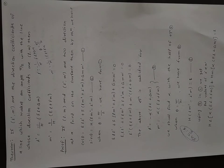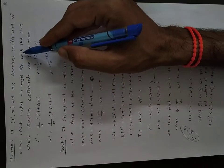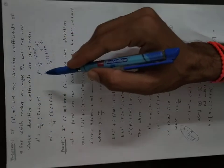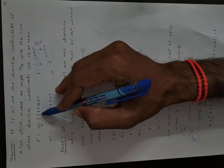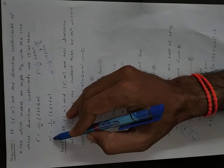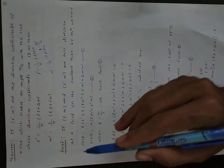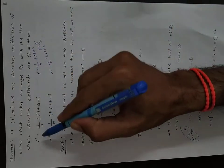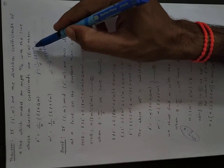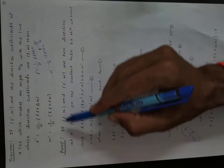Lecture number five. Theorem: if L', M' are the direction coefficients of the line which makes an angle π/2 with the lines whose direction coefficients are L, M, then L' is equal to minus 1 upon H into (FL + GM), and M' is equal to 1 upon H into (EL + FM), where θ equals π/2.